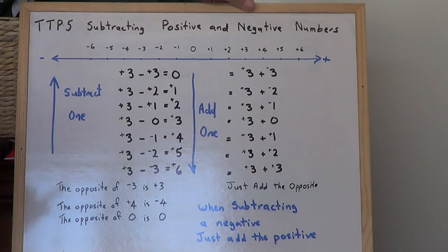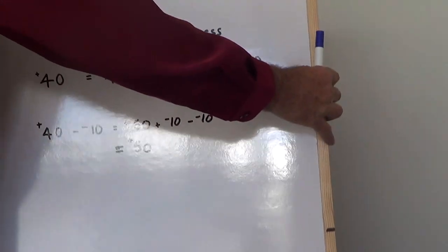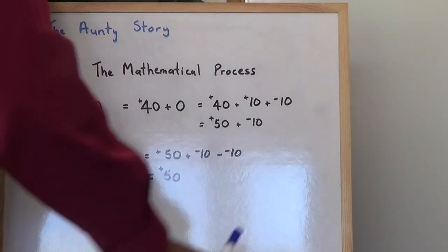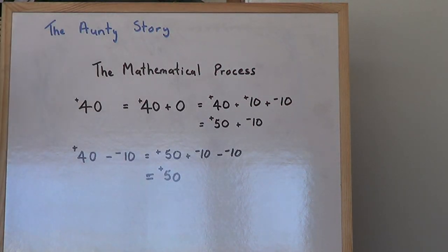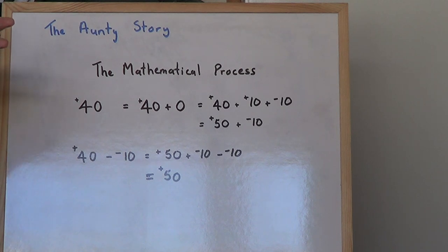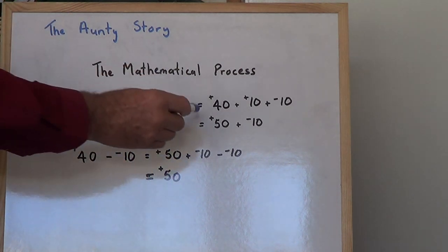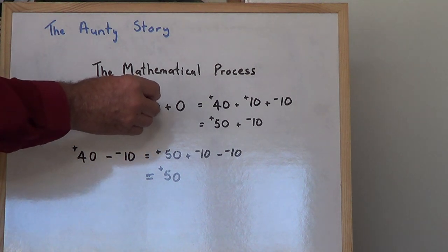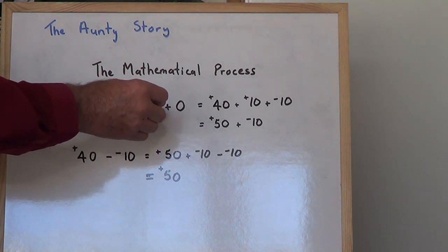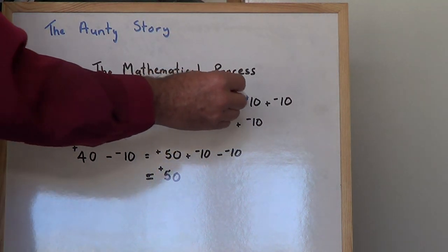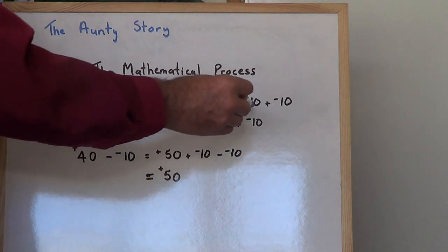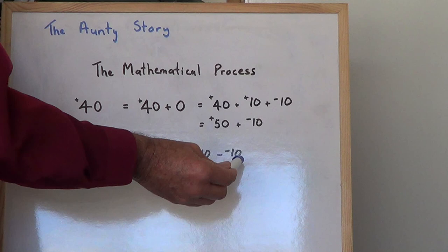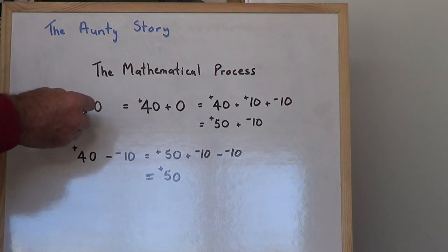Now I'm going to tell you the auntie story. Fred had a birthday, and he only had $40. He actually had $50, but he had a $10 bill. If we take $40, that equals positive 40, which is positive 40 plus 0. Positive 10 and negative 10 cancel out — they are the same as 0. So if you had $50 and owed $10, it would be the same as not owing anything and having $40.